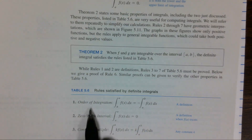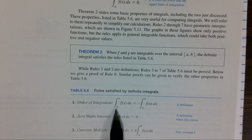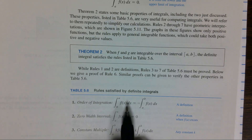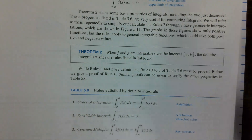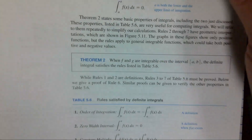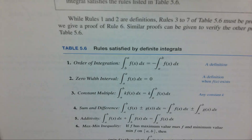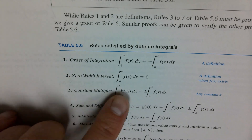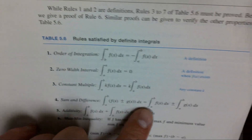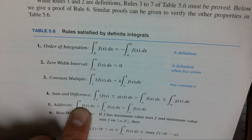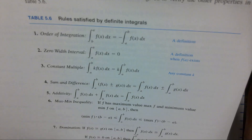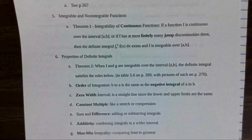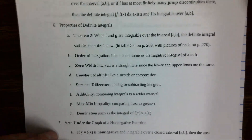Most of the rules will be typed out for you. The order of integration is normally a to b, but if it goes from b to a you reverse it and change the sign to make it from a to b. Other rules include: zero width — when the integral goes from a to a, the result is zero; constant multiple — you can bring a constant in front; sum and difference — you can split the integral; and the additive property — if you have a to b and b to c, you can combine them as a to c. Then there are min-max and domination rules.